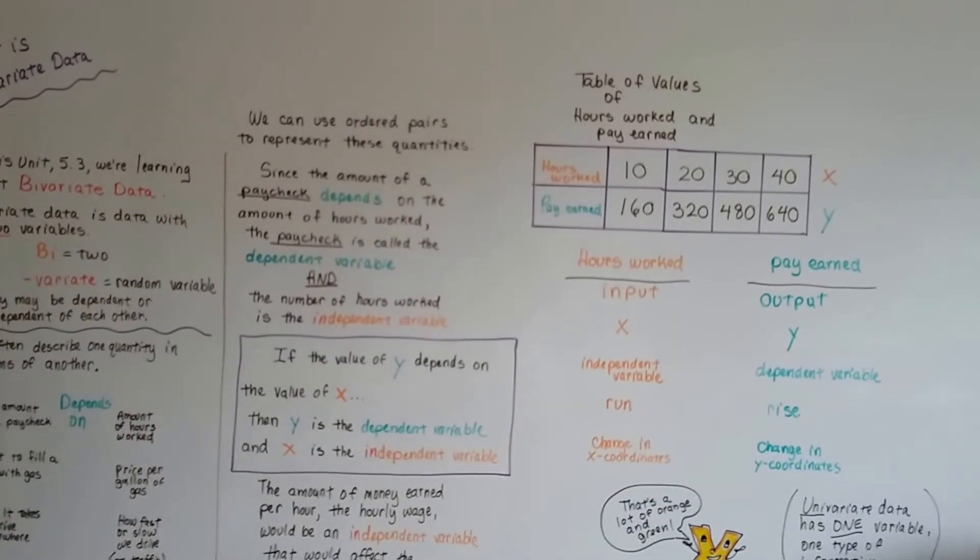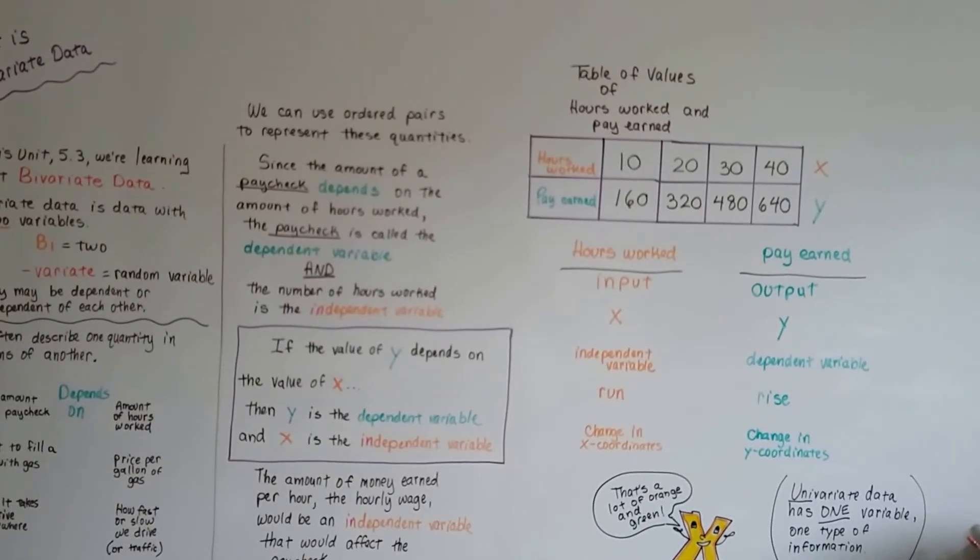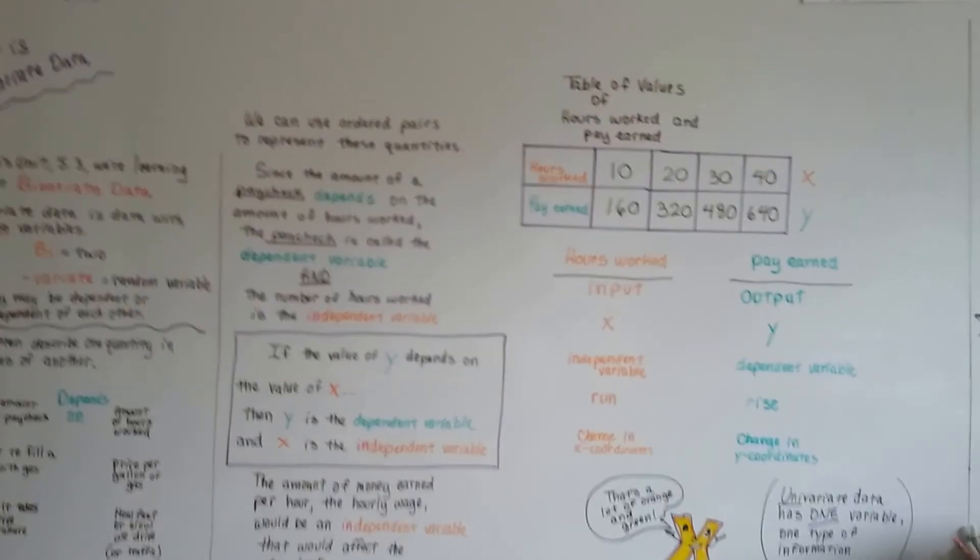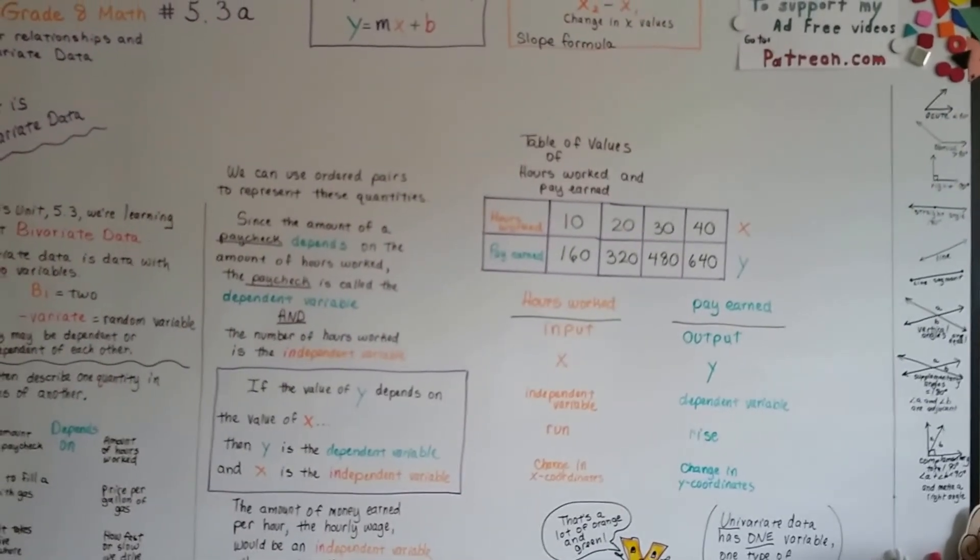So, we're going to continue on talking about bivariate data, and we're going to talk about dependent and independent variables. That's what 5.3 is all about. So I'll see you next video. Bye!